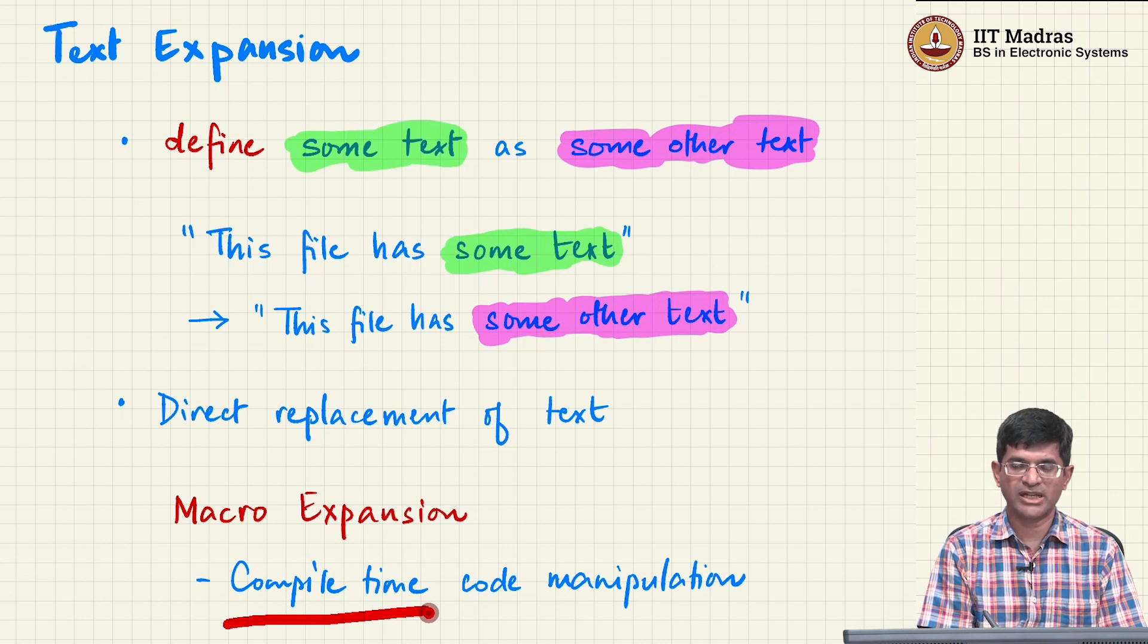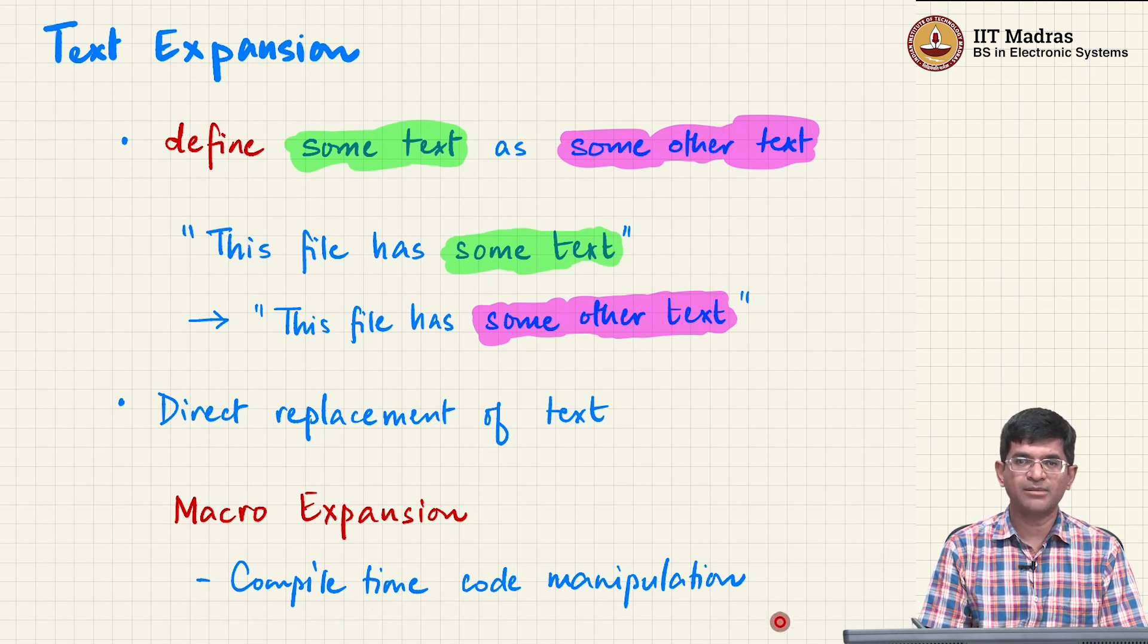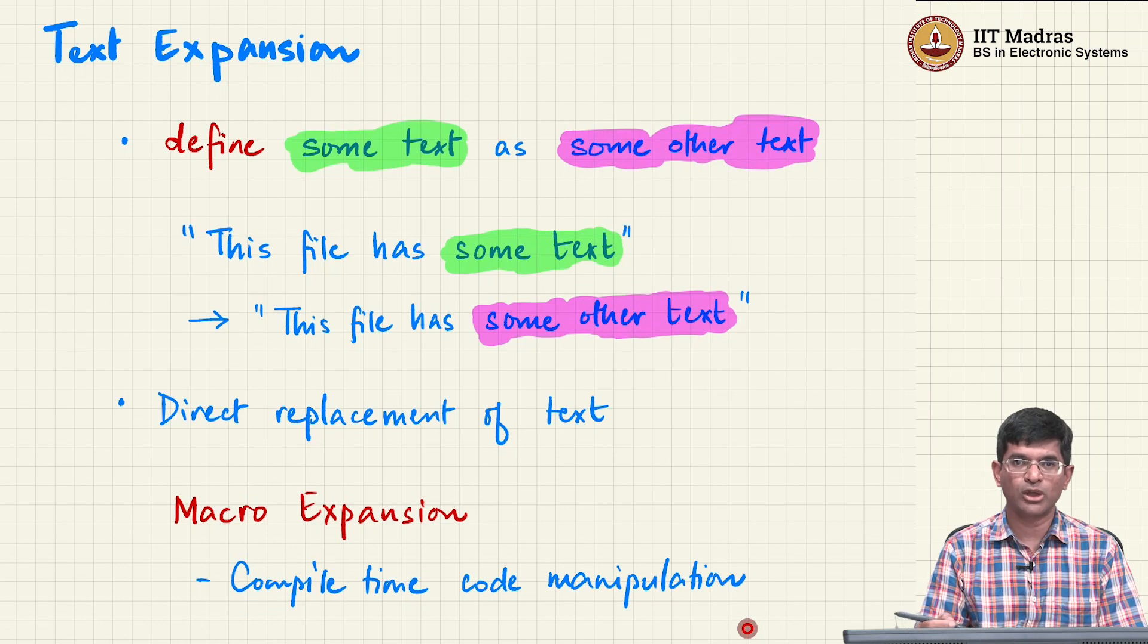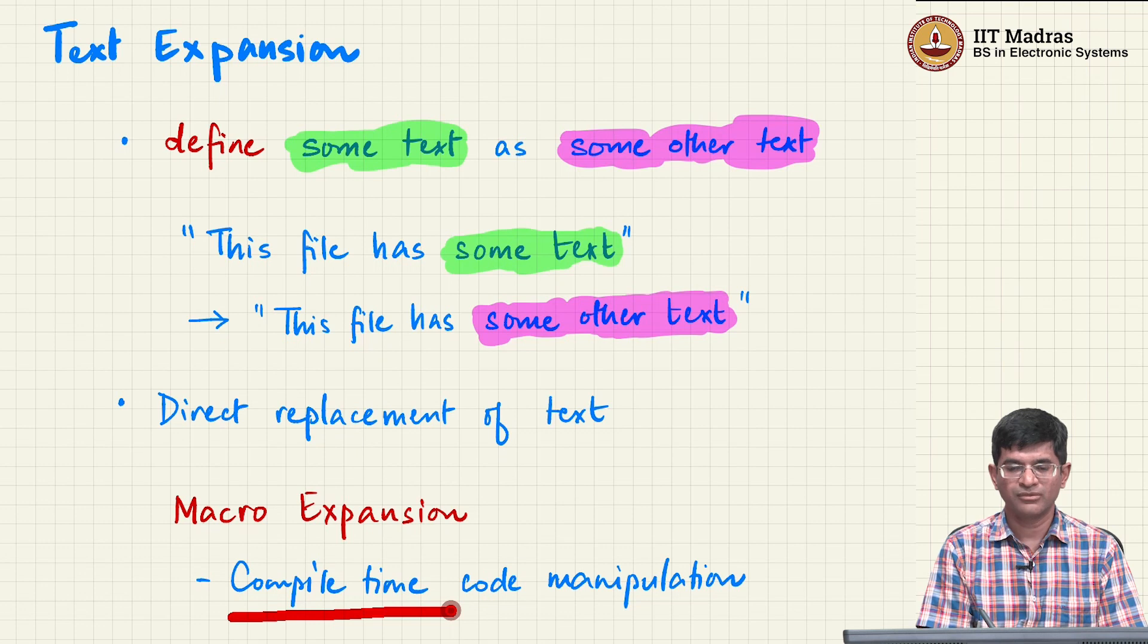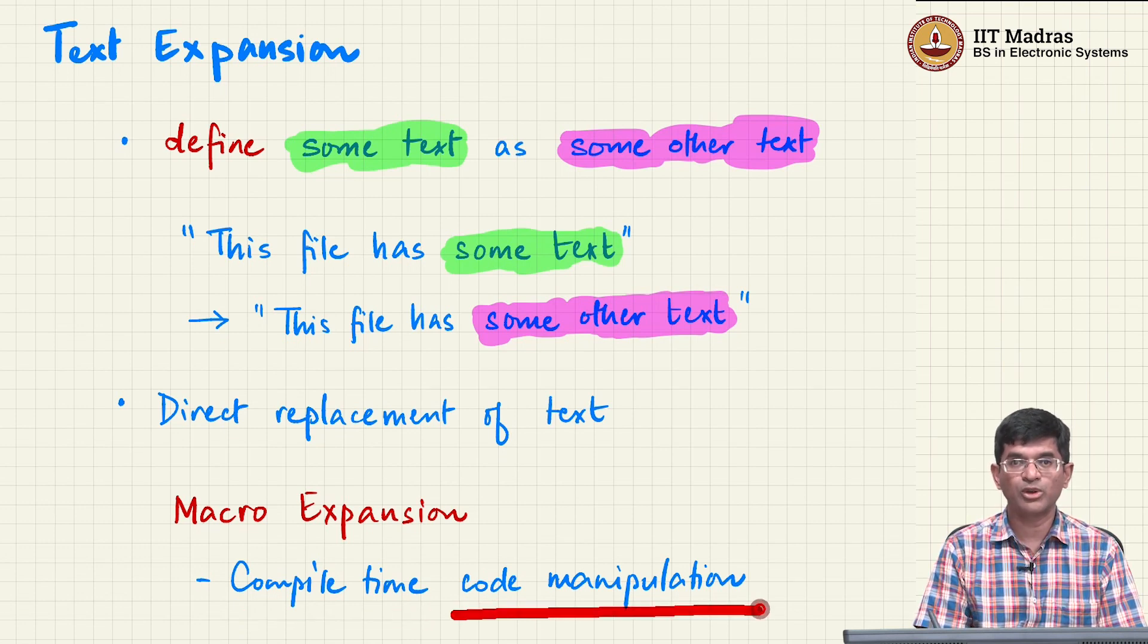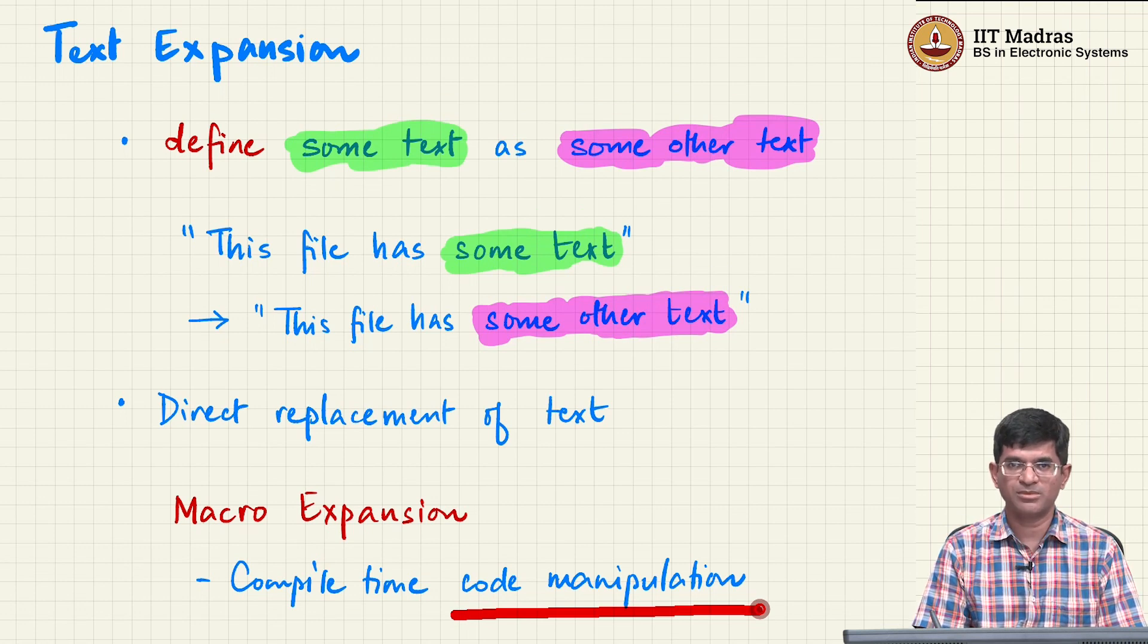There is no concept of text expansion after this unless it is explicitly some kind of a function in your code that does the expansion or manipulates the data in some way. Typically at run time it is very unlikely that you are going to modify the code by itself that you are writing. On the other hand, at compile time macro expansion actually allows you to modify the code that you are writing. We will be seeing examples of this as we proceed.